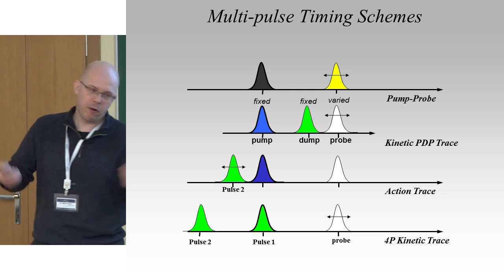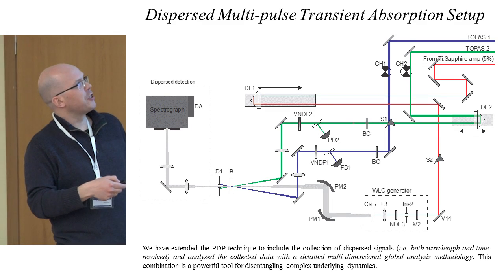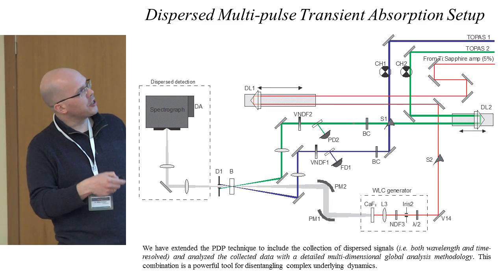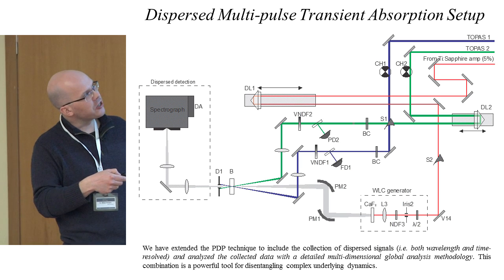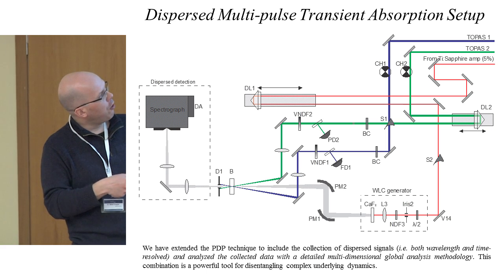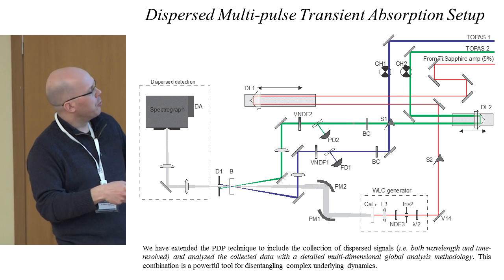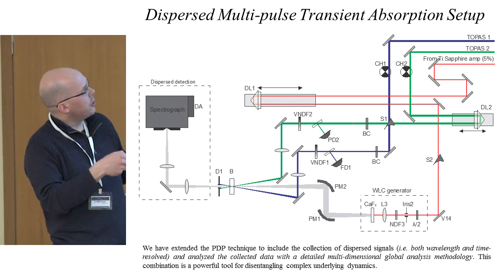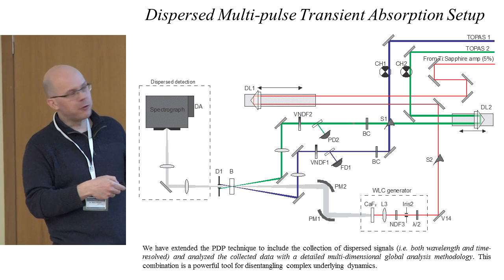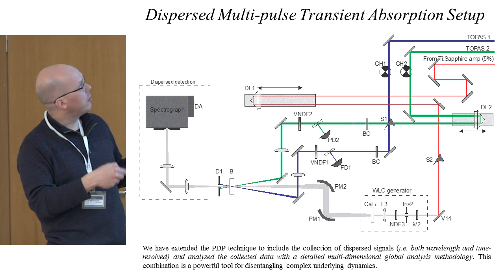The laser setup basically consists of a femtosecond laser system with parametric amplifiers that allow you to get the right wavelength for both experiments. You need to be able to block and unblock all three beams, which all have to arrive at a certain point in the sample. The probe beam, which is a white light supercontinuum, needs to pass the sample, intersect with the two actinic beams in time and space, and then be dispersed in a spectrograph for detection.